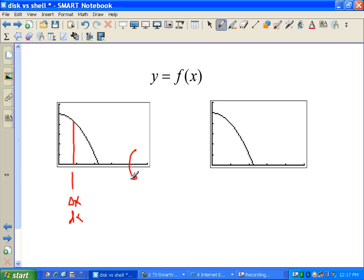If I take that slice and I rotate it about the X axis, then I'm going to end up with discs. So, in this case, because my slice is perpendicular to the axis rotation, I'm going to want to use the disc method or possibly the washer if there was a hole that we had to take into account.